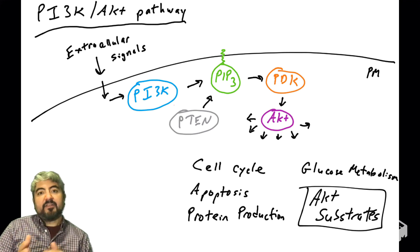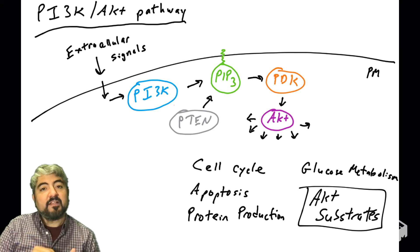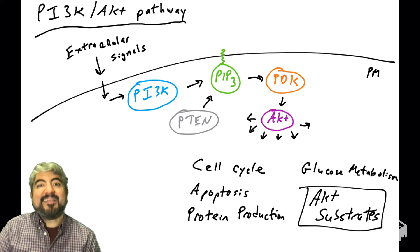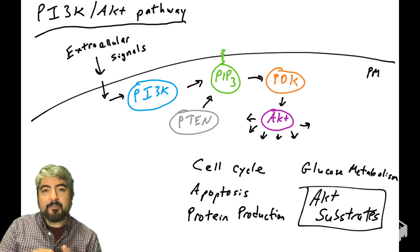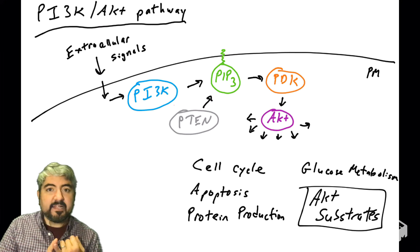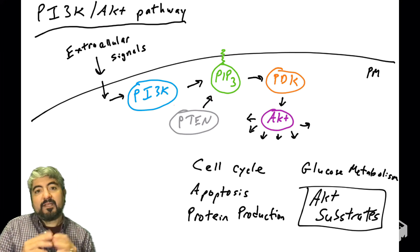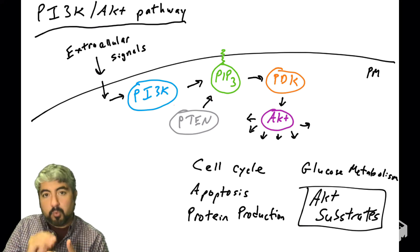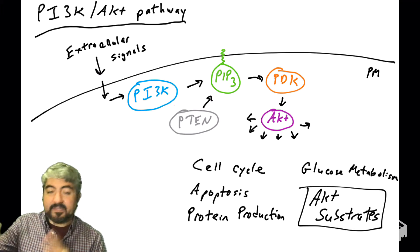So in the previous video, we talked about how AKT can phosphorylate proteins and either activate those proteins or inactivate those proteins — it really depends on the proteins. Those AKT substrates played a role in regulating the cell cycle and regulating apoptosis. So we're going to continue talking about some notable, important AKT substrates in this video.